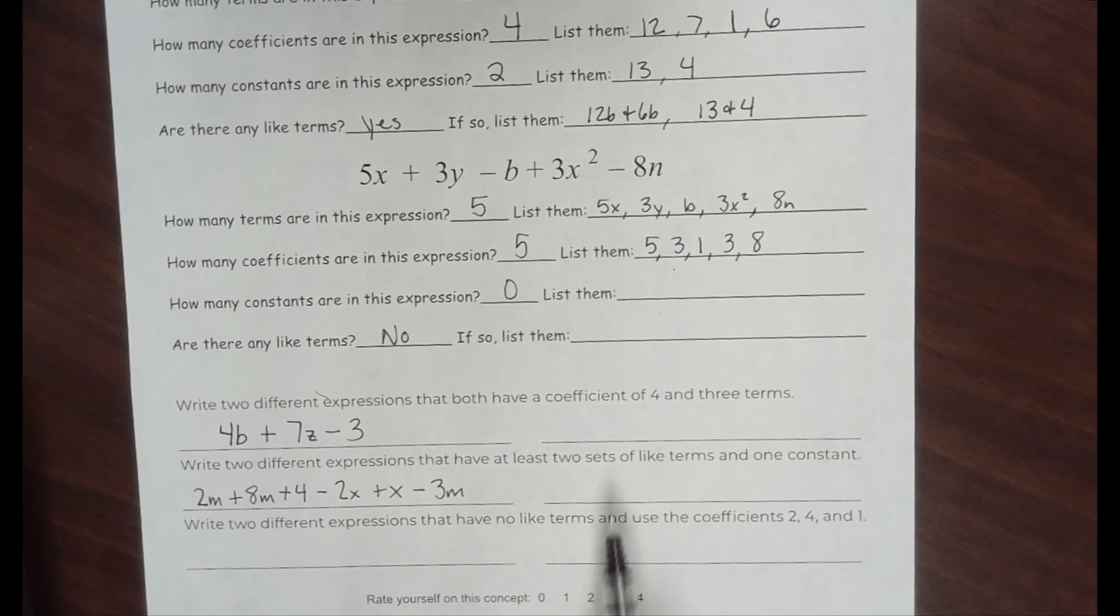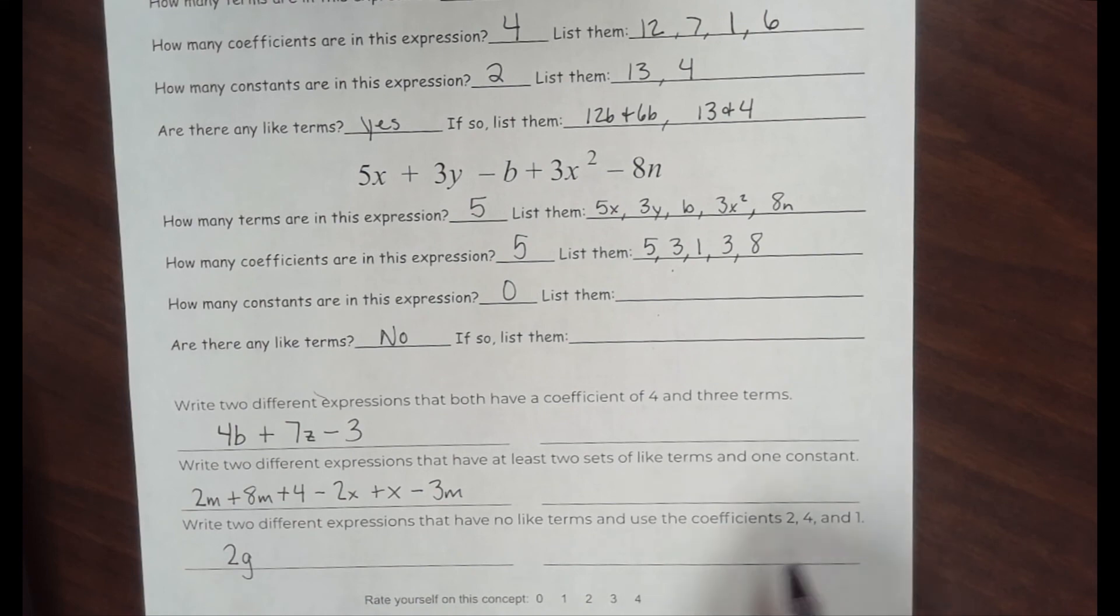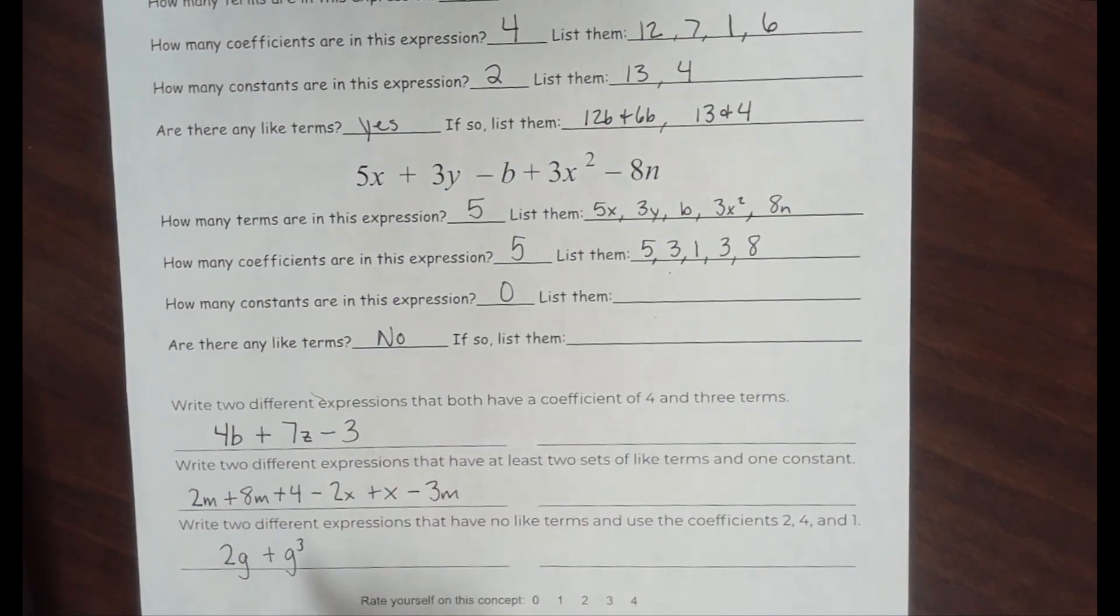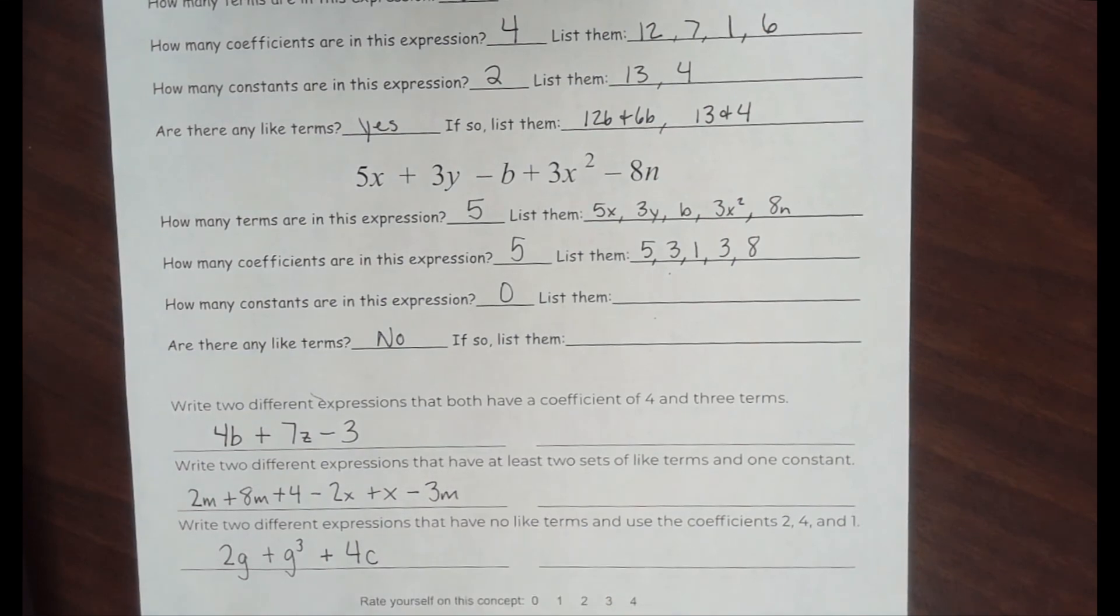Let's try this one, write two different expressions that have no like terms, and use coefficients 2, 4, and 1. Coefficient means it's a number multiplied to a variable. So 2 times any variable, what do we want to use? 2 times g. There's 1 with a coefficient. They want no like terms. That means they've got to have different variables. So how about plus g to the third power. That is different than g. And what's my coefficient here? It's not 3. It would be 1. Do I have to write a 1 there though? Nope. Plus, anything else with a coefficient of 4? 4c. There are a bazillion different ways you can do this. I want you to come up with your own here.